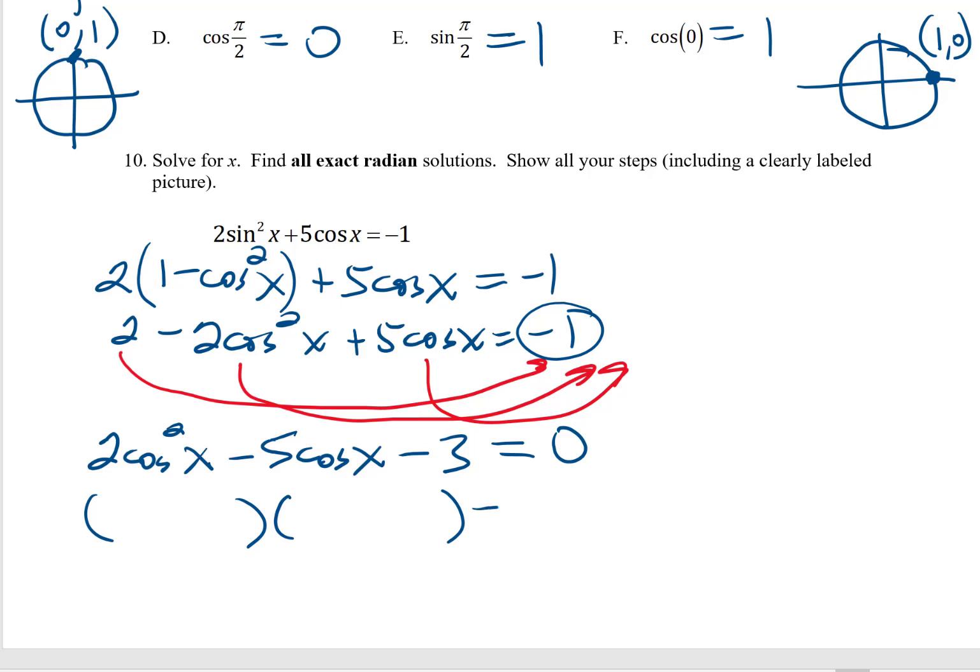And there is my 0 that I need on the one side. And now I can go ahead and tackle the factoring. I don't have a GCF. I have 3 terms, so I'm thinking FOIL problem here. This has got to be 2 cosine x and cosine x to make 2 cosine squared x. At the back, I'm thinking it's got to be a 3 and a 1. How am I going to make that 5? It's got to be a negative 5. So I'm thinking I'm going to need to do a negative 6 from this multiplication and then a positive 1 from this multiplication. And that does it. There's my negative 5 cosine x and take away 3.